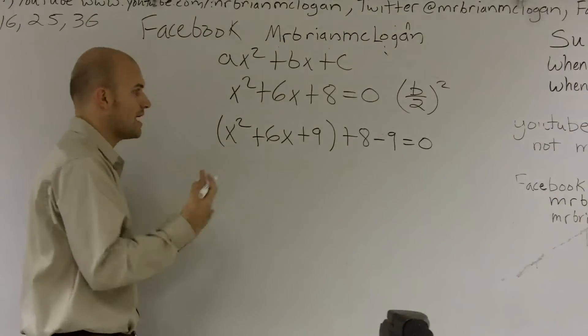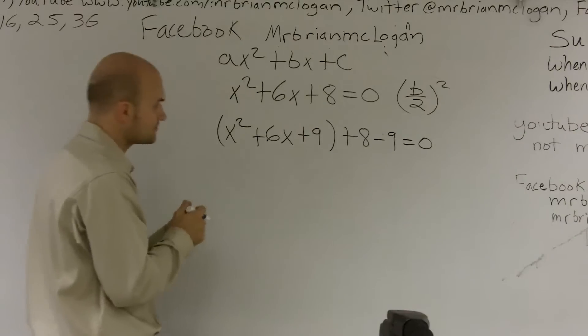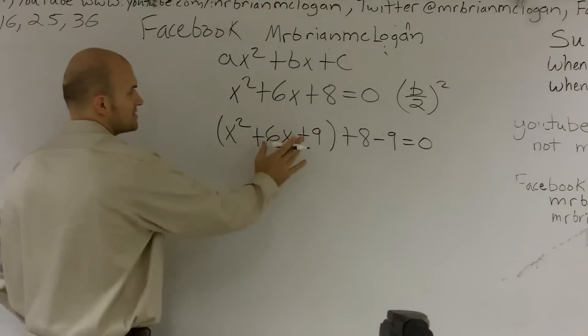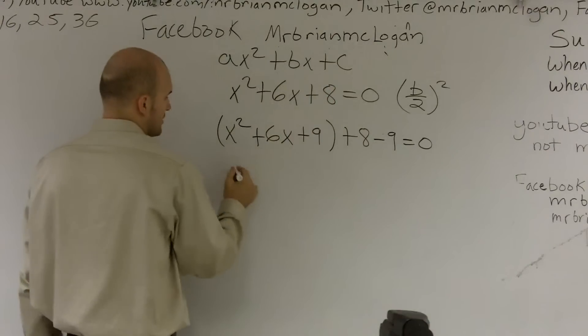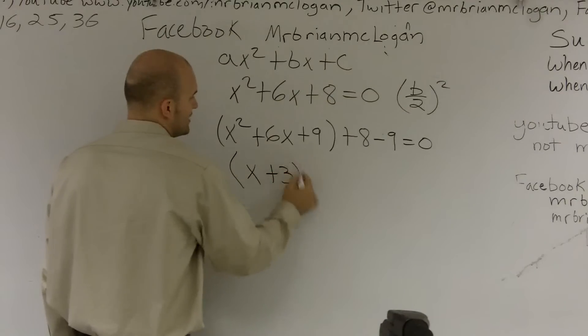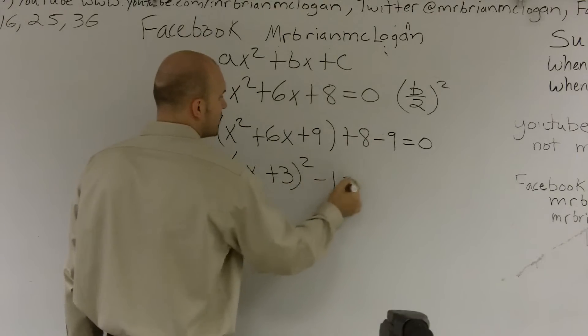So here, I look at it, and I see where is my perfect square. Well, this is going to be my b over 2, which would be 3. So it's x plus 3 squared. And then 8 minus 9 minus 1 equals 0.